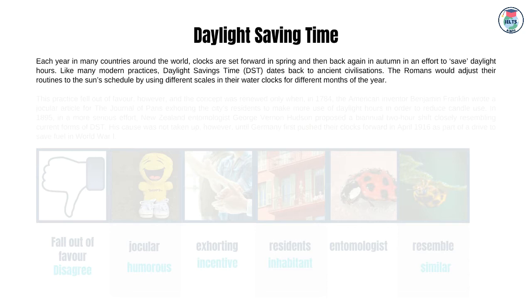Each year in many countries around the world, clocks are set forward in spring and then back again in autumn in an effort to save daylight hours. Like many modern practices, daylight savings time (DST) dates back to ancient civilizations. The Romans would adjust their routines to the sun's schedule by using different scales in their water clocks for different months of the year.